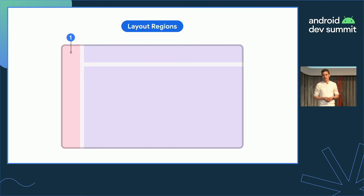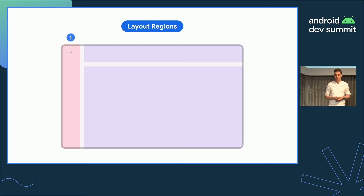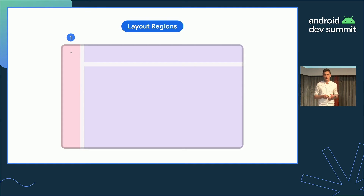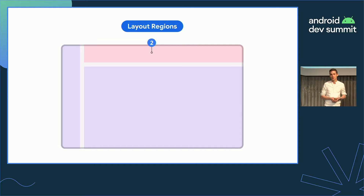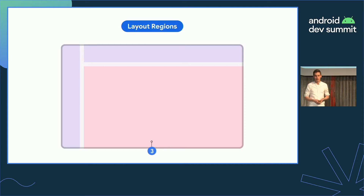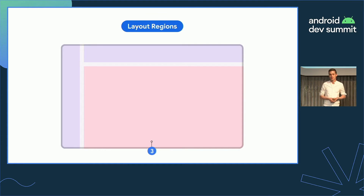The first region is the navigation region. This contains navigation components like the navigation rail or the navigation drawer, and it helps users navigate between destinations inside an app or access important actions. Second is the app bar region, used to display and group components and actions that help users perform key tasks or take action on elements inside number three, the body region, which displays most of the content in an app. This is where you'll find most of your components like lists, cards, buttons, and images.